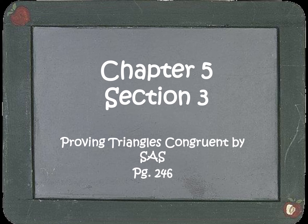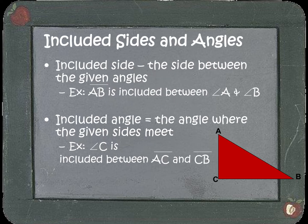Today we're going to cover section three of chapter five, learning how to prove triangles are congruent by side angle side. SAS is the acronym for the shortcut side angle side. Within this chapter we'll learn five different shortcuts — this is just the first one. On your quiz on Wednesday, you've only learned one shortcut, so it'll either be that the triangles are not congruent or you can prove them congruent with side angle side.